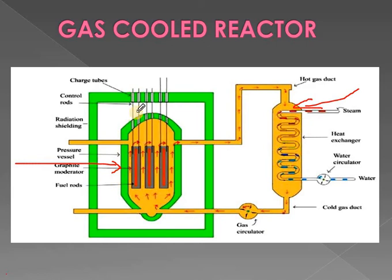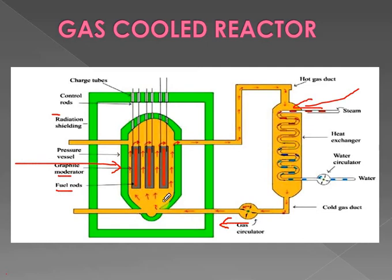In this reactor, we have control rods, radiation shielding, moderator, and fuel rods — everything similar to previous reactors. The key difference is that here, gas is used as the coolant. Initially, natural gas gets pumped into the reactor vessel.